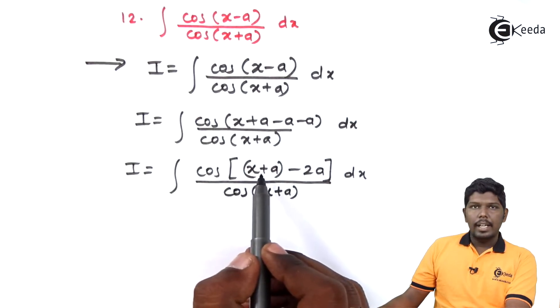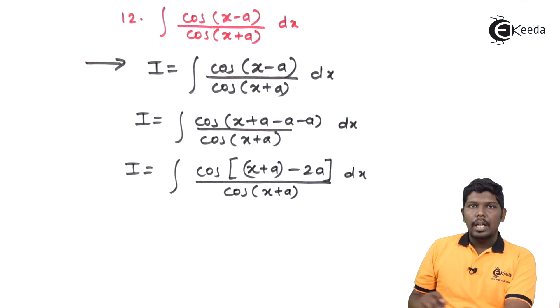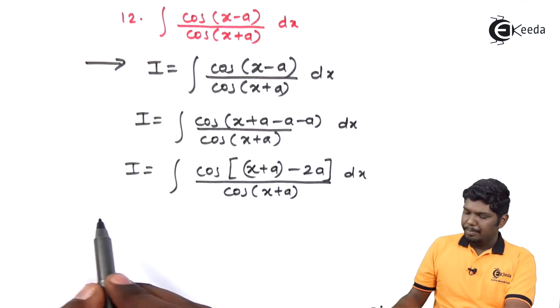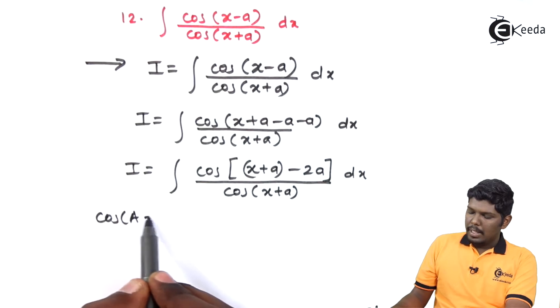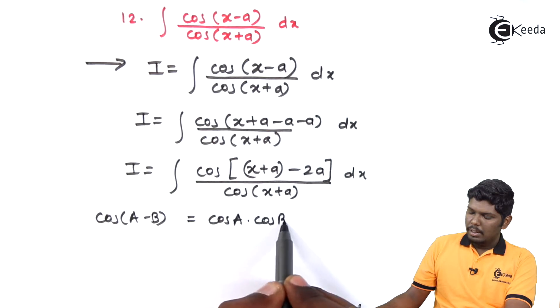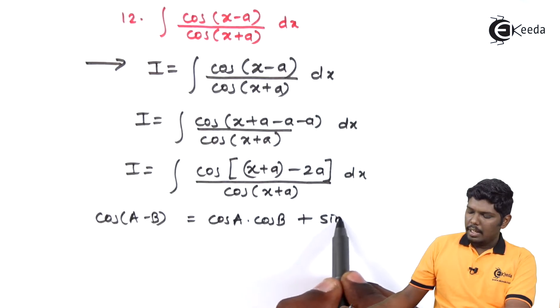Now considering this first angle as a and second angle as b, you can expand using the formula cos a minus b. Cos a minus b, we know that it is cos a cos b plus sin a into sin b.